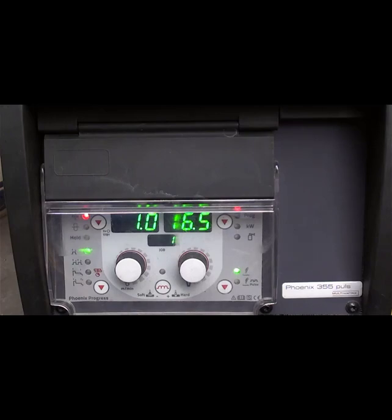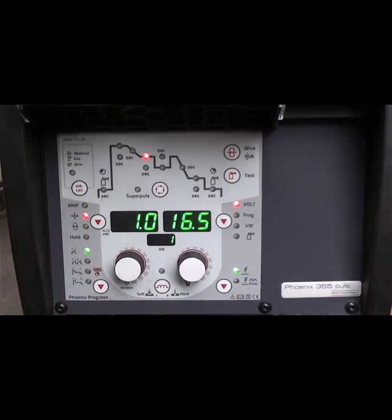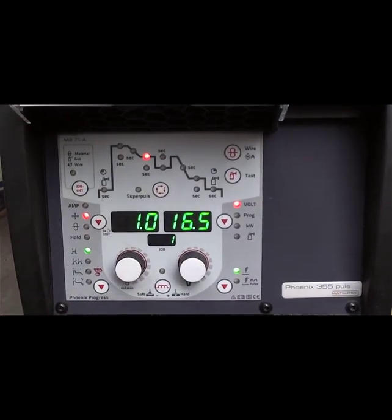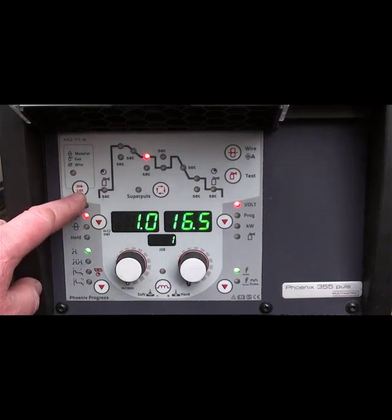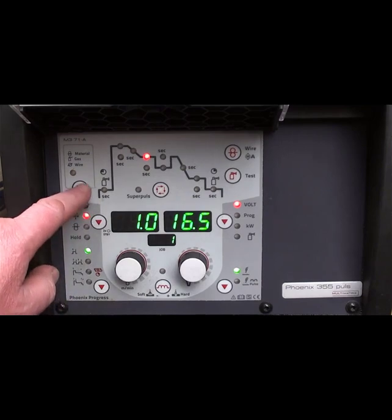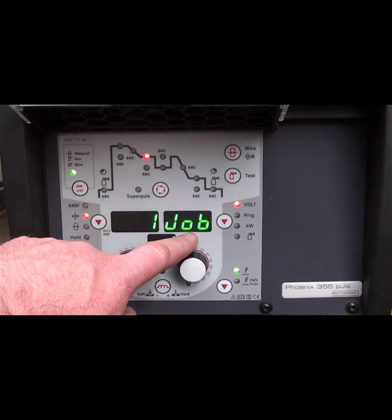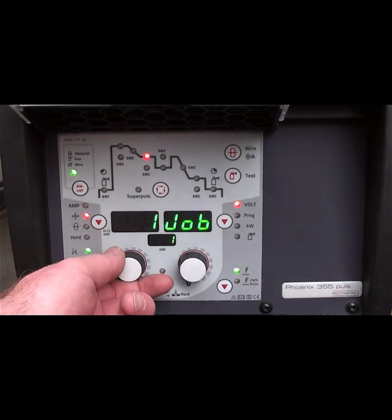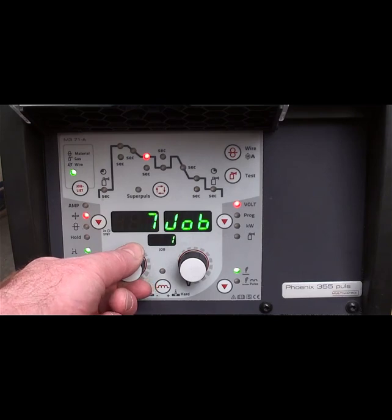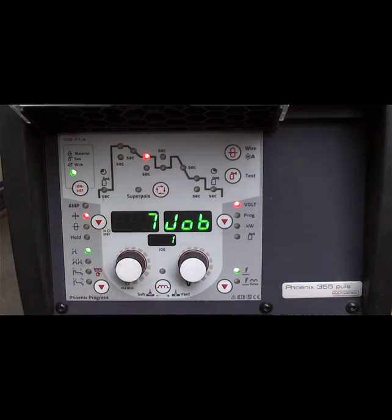Right, so onto the front panel for setting up this welder. What we need to do is just lift the screen up, get it out of the way. And we've found that when we looked at the chart we needed to be on job number 7. Up here we've got a button that says job list. If I push that button, it says it's on job 1. We want to be on job 7. So just winding it to 7. And that will load the welder up. Just takes a couple of seconds.